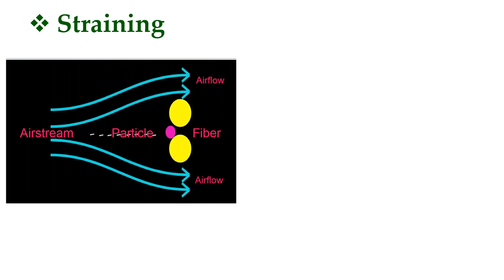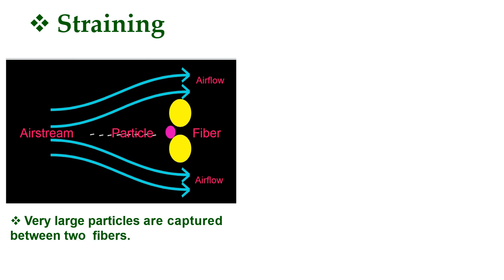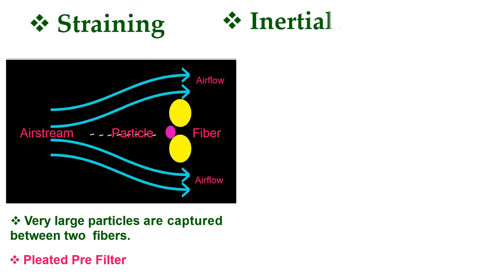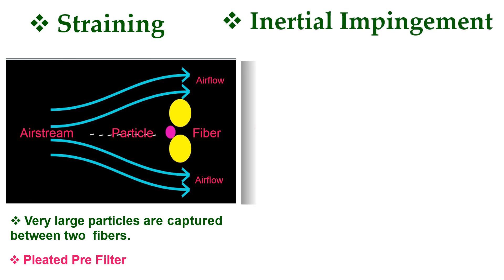In the straining method, referring to the picture shown, very large particles are captured between two fibers. The pink color represents the large particles in the picture. An example of a straining method filter is the pleated pre-filter.